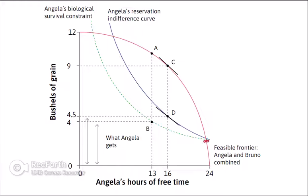She needs at least a minimum point to survive. We're considering a scenario where there is a government. Without one — where the landlord is a pure dictator, Angela is essentially a slave, he has all the bargaining power, and there is no law or safety net — the situation differs. However, in this scenario, there is a reservation indifference curve because the government provides Angela with a reservation option.